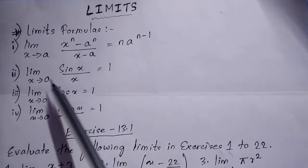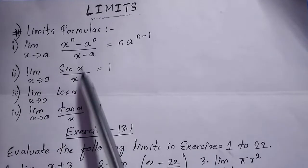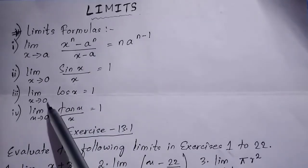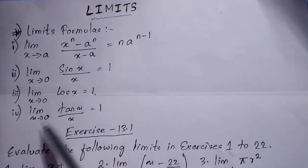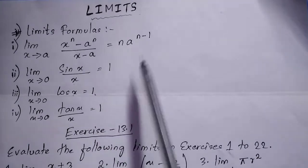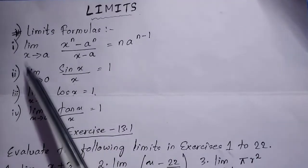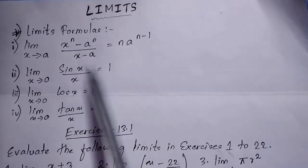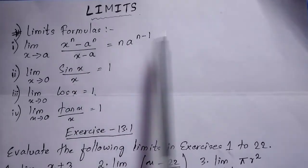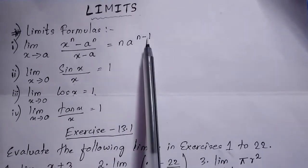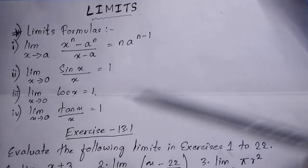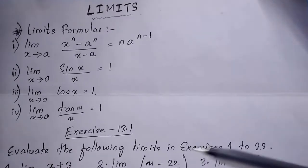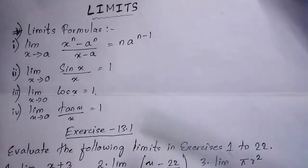The second formula: lim x→0 of sin x / x = 1. If lim x→0, then cos x = 1. And if lim x→0, then tan x / x = 1. These are some of the important formulas. Now starting with Exercise 13.1 — this part is easy and has only limits, no derivatives. These are the formulas you need, so let's start.